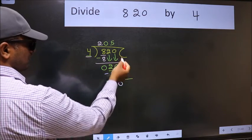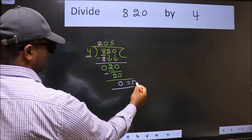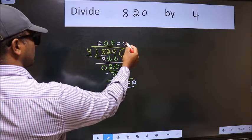No more numbers to bring it down. So we stop here. This is our remainder and this is our quotient.